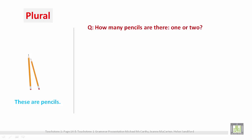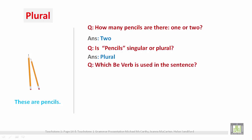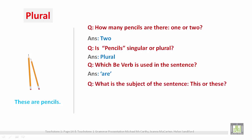Plural example — 'These are pencils.' How many pencils are there? One or two? Answer: two. Is 'pencil' singular or plural? Plural. Which be verb is used in this sentence? Are. What is the subject of the sentence — 'this' or 'these'? These. 'These' is used with a plural noun.